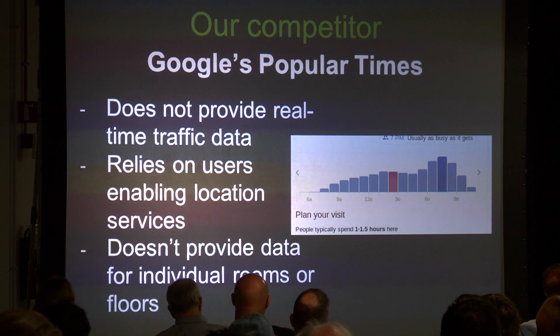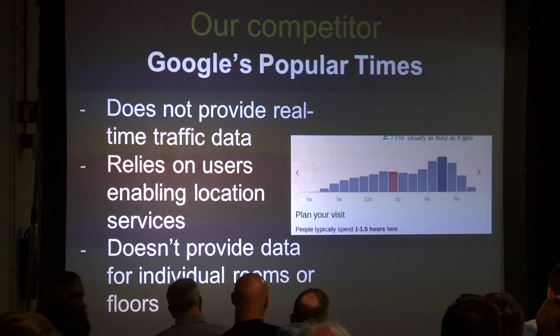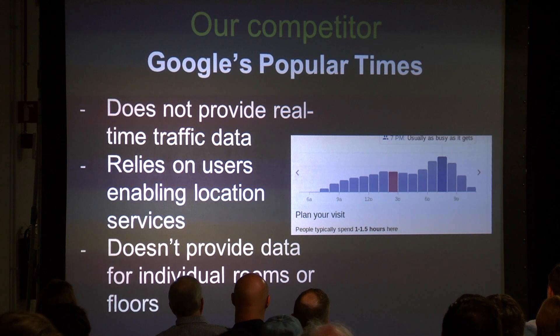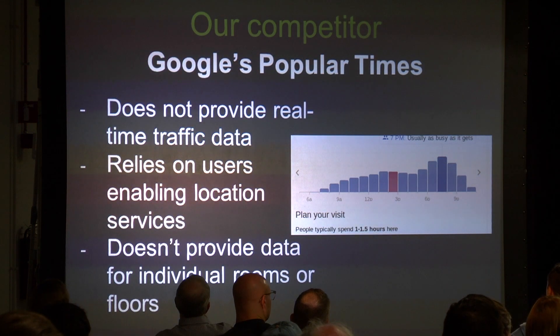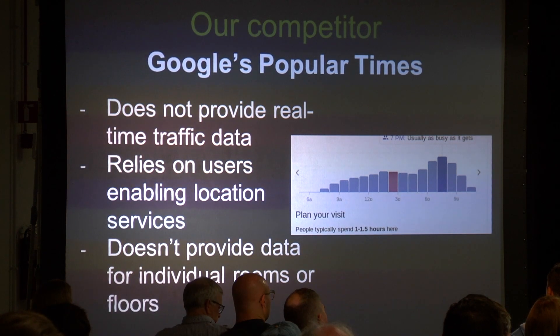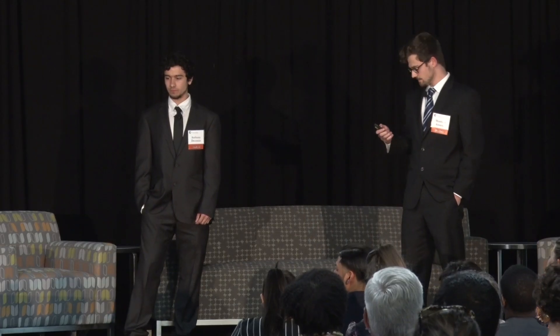And it looks similar to this — you might have seen it if you use Google Maps, it's Google's Popular Times. But this is different from what we're doing because it uses GPS data for the entire building, while what we do is on a room-by-room basis and provides real-time data.